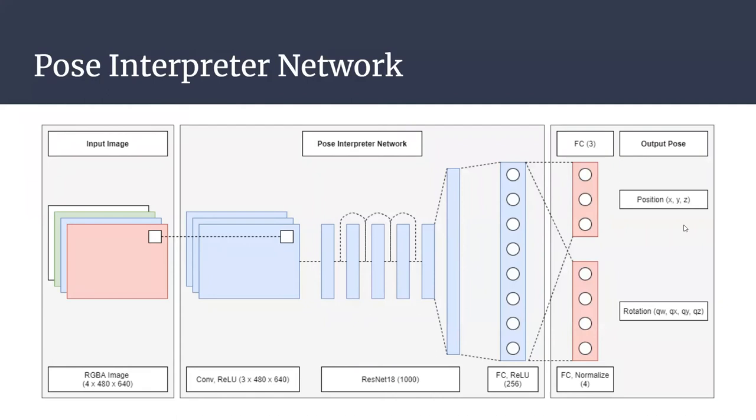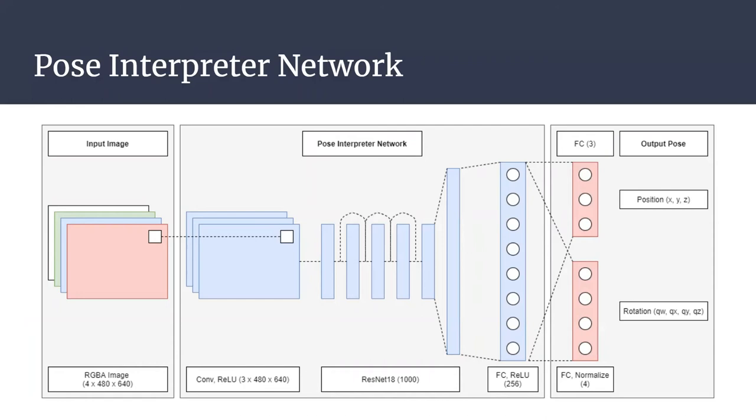Aside from the networks that Alex worked with, I also implemented a simple neural network for estimating the can pose from rendered images of the scene. This pose interpreter network extends the ResNet-18 architecture and outputs the estimated pose of the soup can.